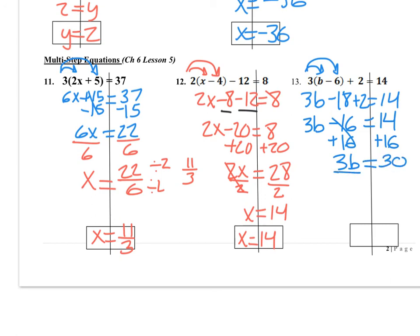And I get left with 3b equals 14 plus 16, that's 30. And then to finish it off, divide by 3 on both sides. That undoes my multiplication. B is now by himself, and 30 divided by 3 is 10. So b equals 10.